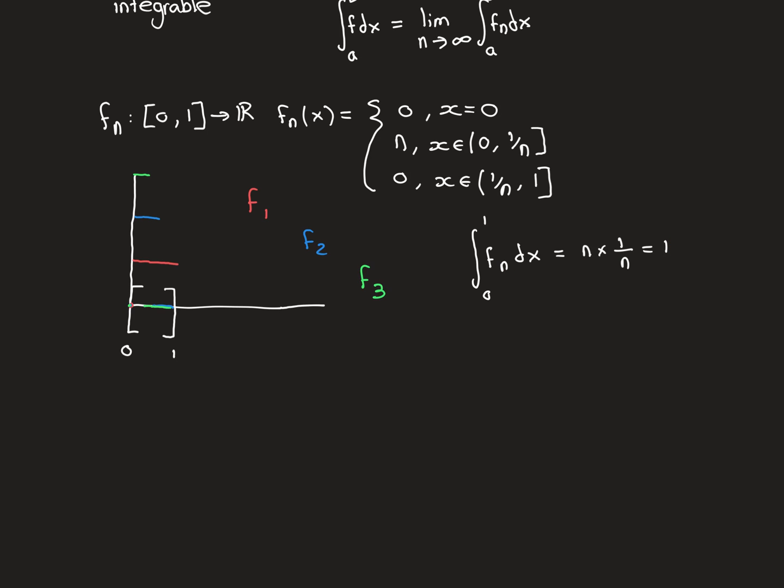The integral on the rest of the interval from 1/n to 1, where the function is zero, is just zero. So these functions are all Riemann integrable and their integrals are all equal to 1. We have a sequence of integrable functions whose integrals are all equal to 1.